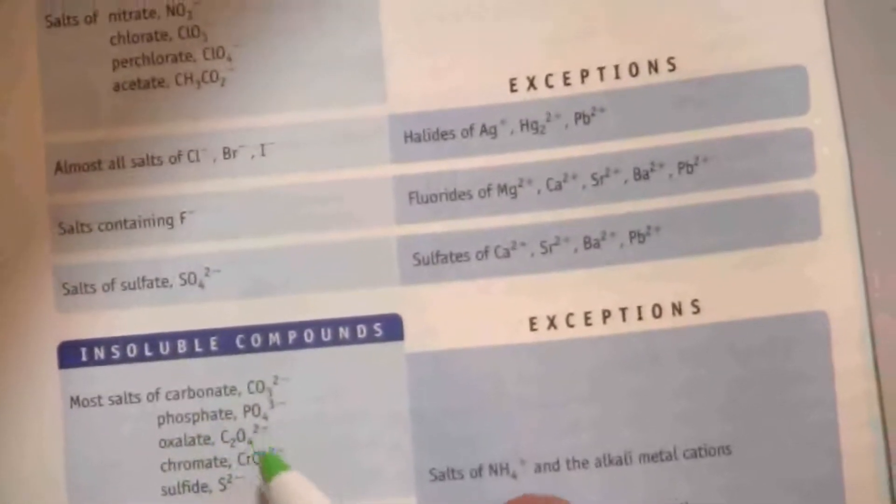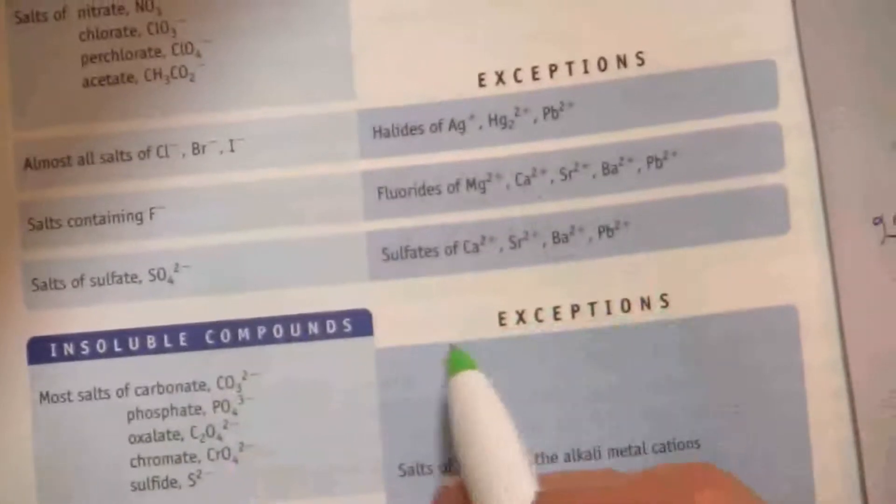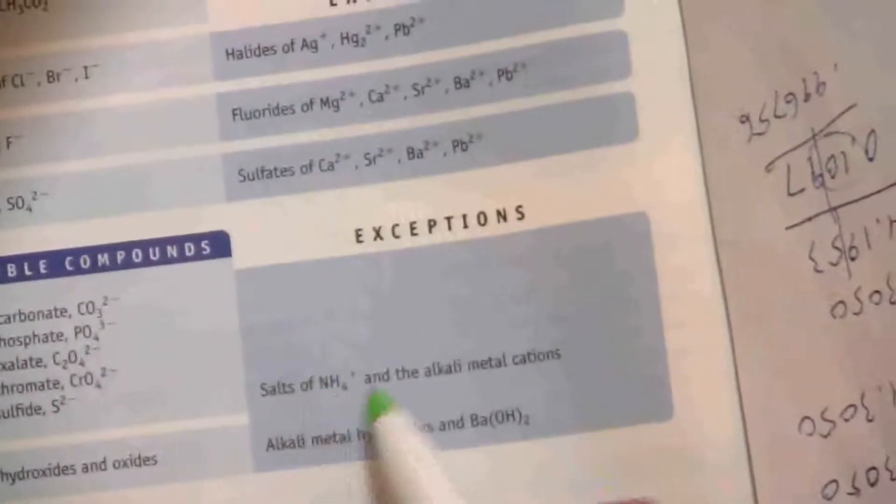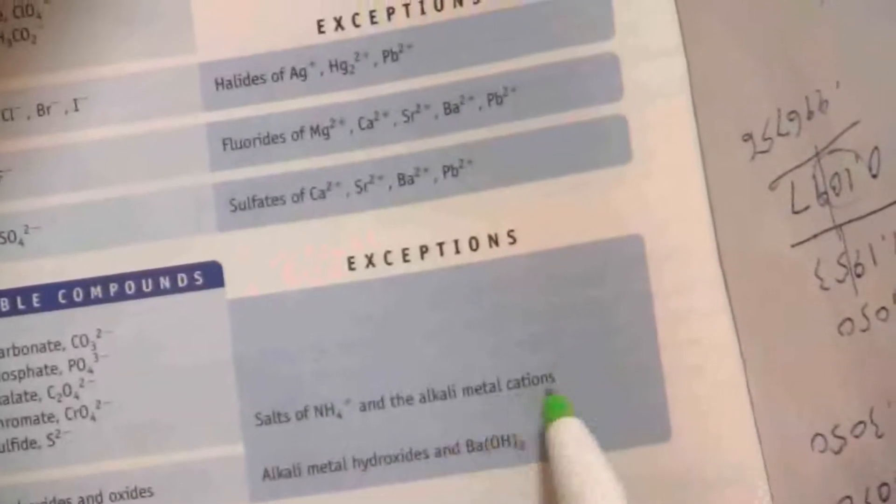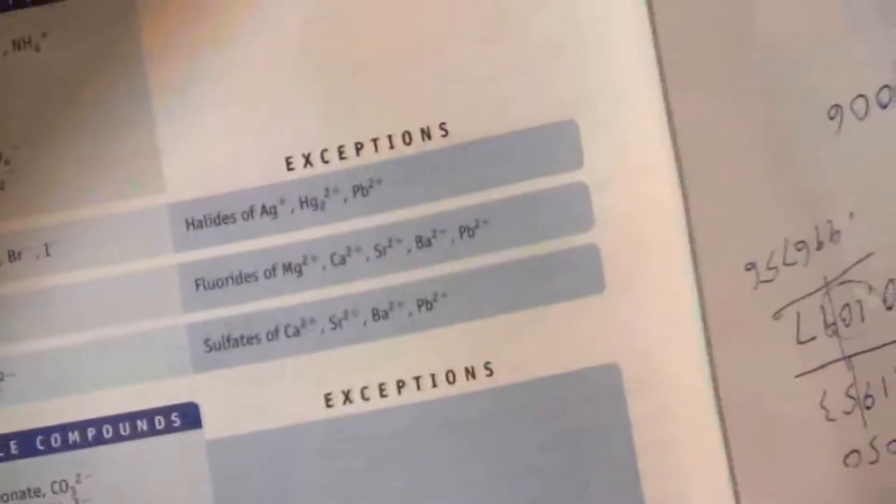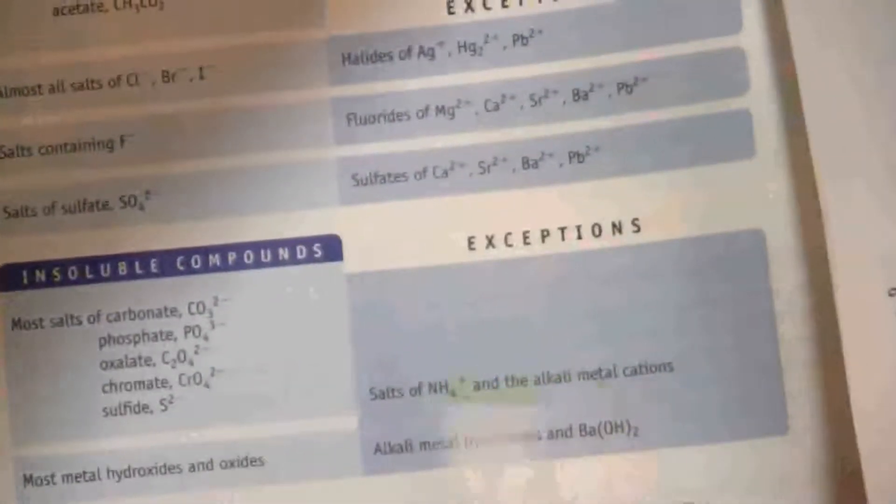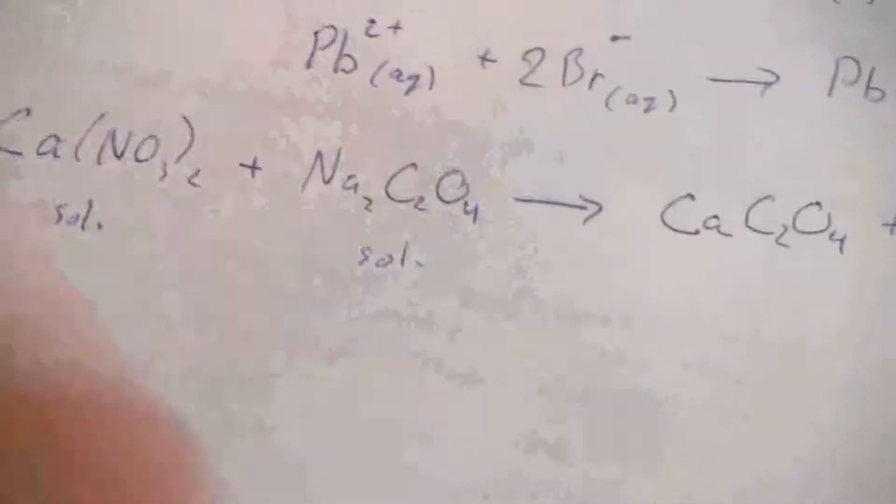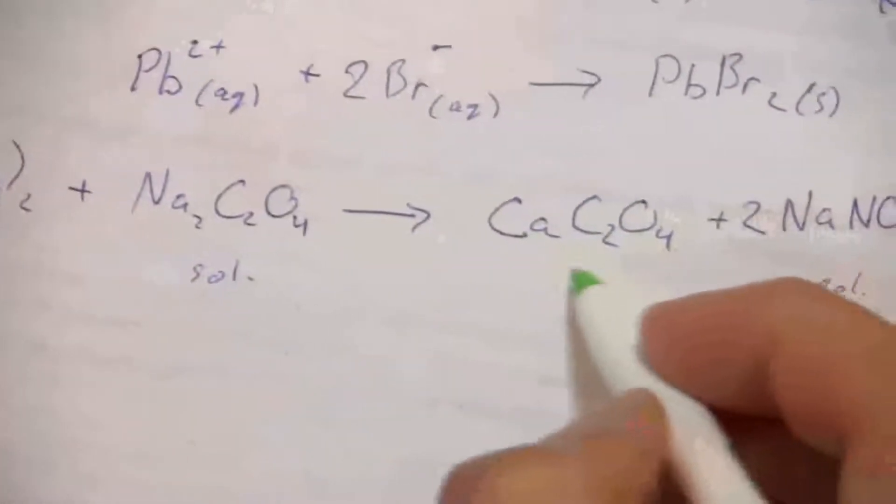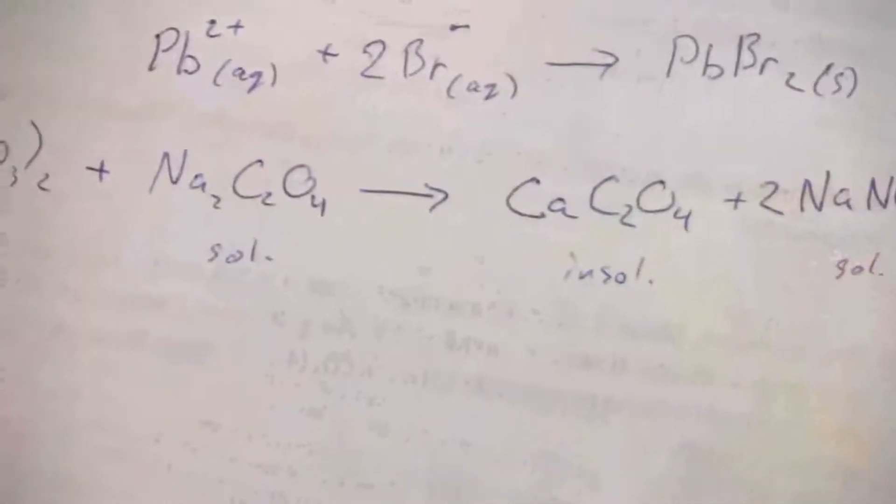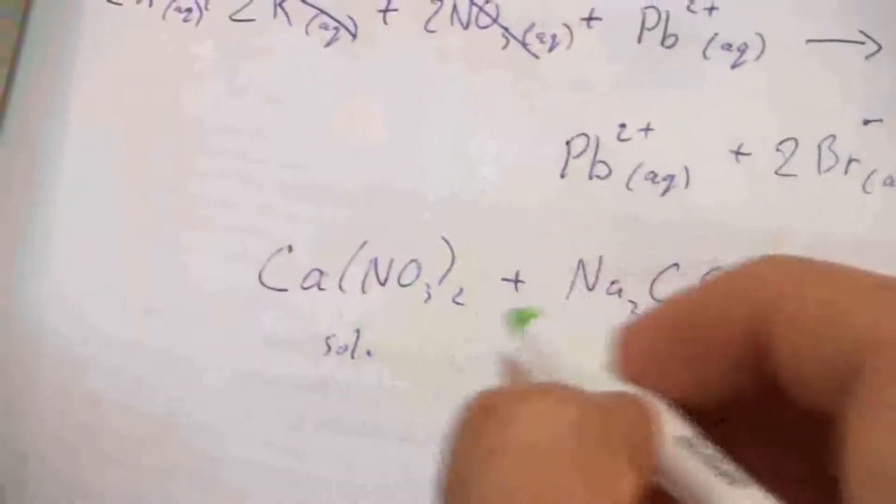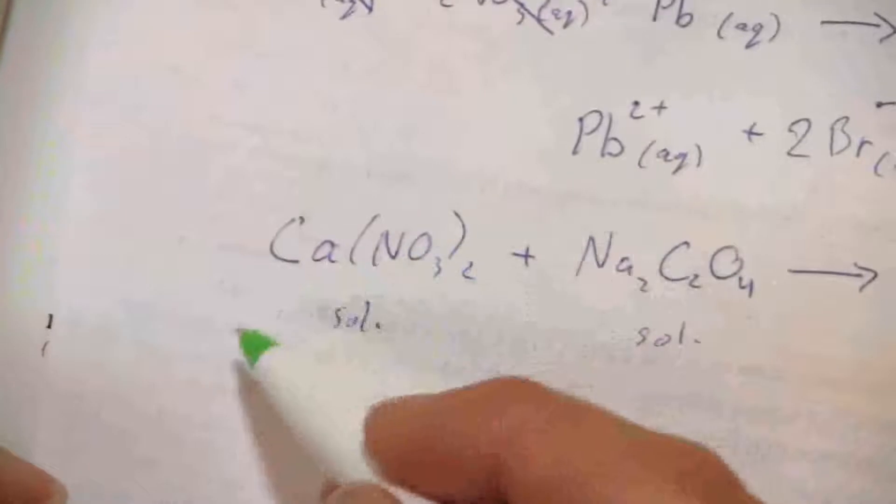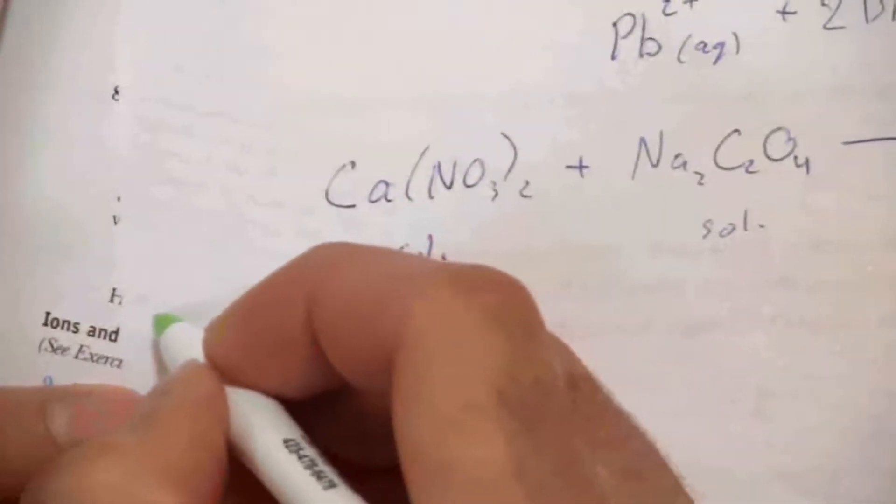Any oxalate containing compound is insoluble. However, there are these exceptions: the salt of ammonium and the alkali metal cations. And that's why I said the sodium oxalate was soluble because it's an exception to that rule. However, calcium is not an exception to that rule. And so what I have is I have an insoluble compound.